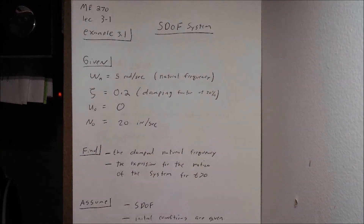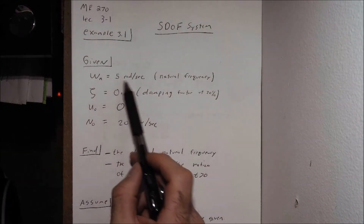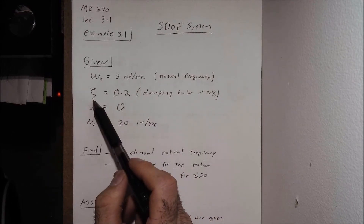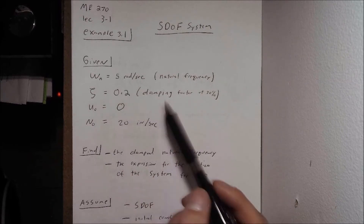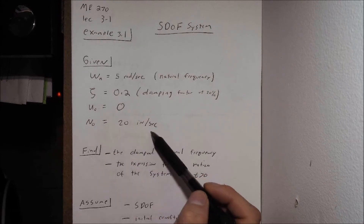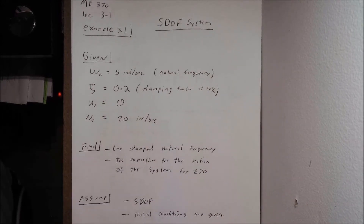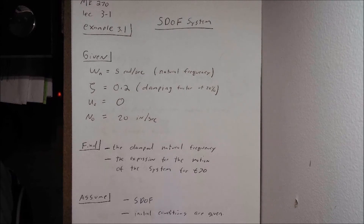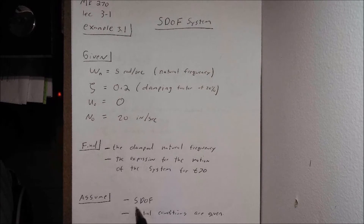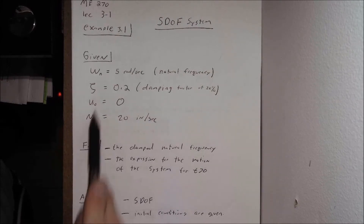In the problem statement, they tell us that our natural frequency omega sub n is equal to 5 radians per second, our damping factor is 20%, so we have our damping factor of 0.2, our U0 is 0, and our V0, our initial velocity, is 20 inches per second. They want us to solve for the damped natural frequency and find the expression for the motion of the system for time greater than 0. We'll assume a single degree of freedom system and that the initial conditions are as given.